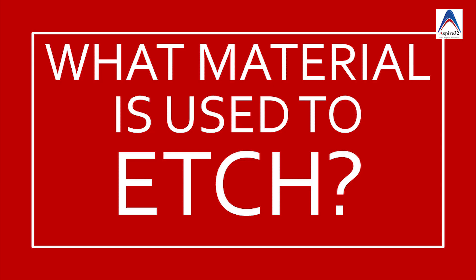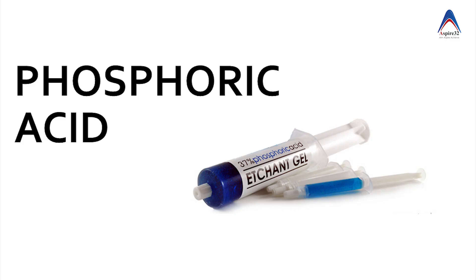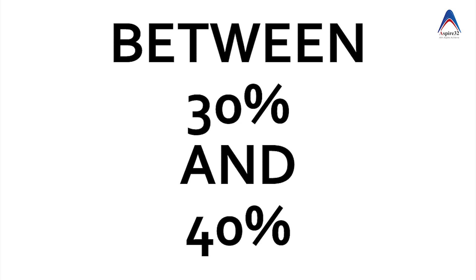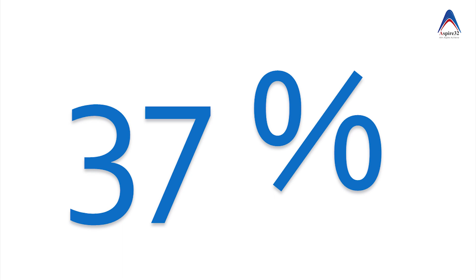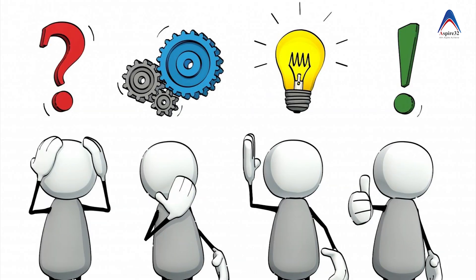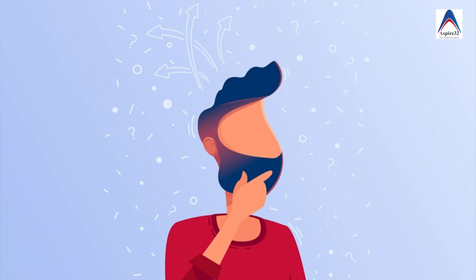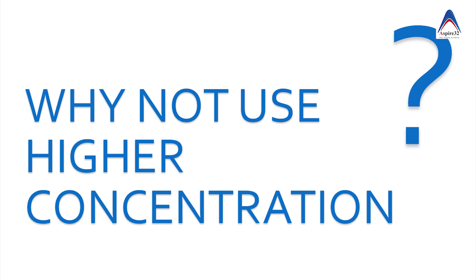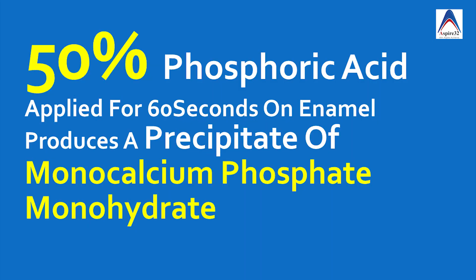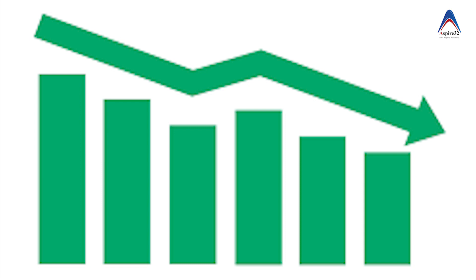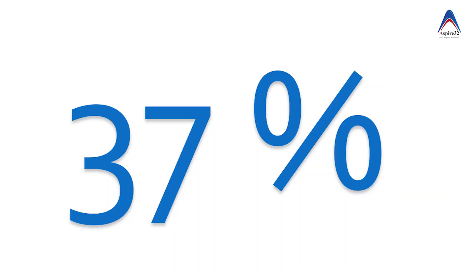Most of the time you will be asked what is the component of the etchant, and the answer is very simple — it is made up of phosphoric acid, and generally the concentration ranges from 30 to 40 percent, but most textbooks recommend 37 percent phosphoric acid. They did try higher concentrations, but when you use more than 50 percent phosphoric acid it produces a precipitate of monocalcium phosphate monohydrate, and if you use less than 27 percent it forms dicalcium phosphate — both of which prevent bonding of the dentin bonding agent to the tooth structure. That's why we only use a concentration ranging from 30 to 40 percent, ideally 37 percent.